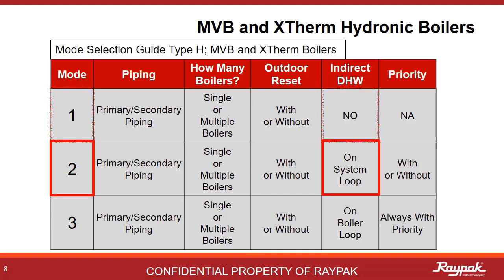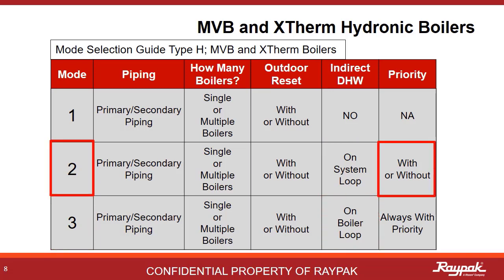If there is an indirect system present on the system loop, then it is a Mode 2. If the indirect is present on the boiler loop, then it's a Mode 3. Mode 2 can be run with or without priority, while Mode 3 is always with priority.